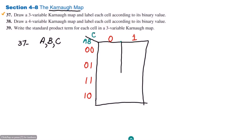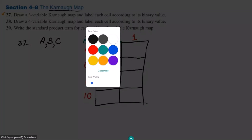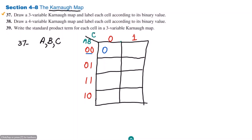Let me draw this table. Now combining the row and column labels, the cell values are: the first cell is 000, the second cell is 001, then 010 — where AB is 01 and C is zero — and 011 where AB is 01 and C is one.